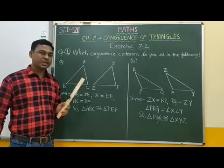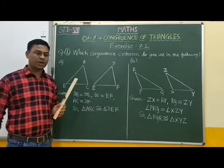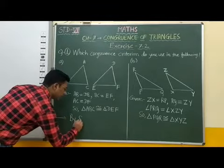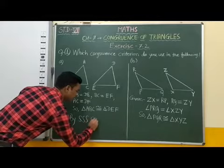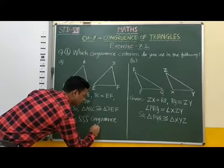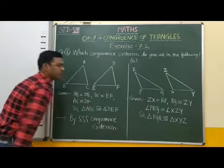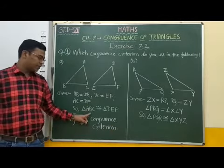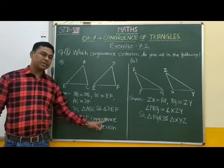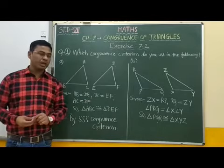Therefore, by SSS congruence criterion, these two triangles are congruent. We can write: by SSS congruence criterion, triangle ABC is congruent to triangle DEF — that is, by the Side-Side-Side congruence criterion.